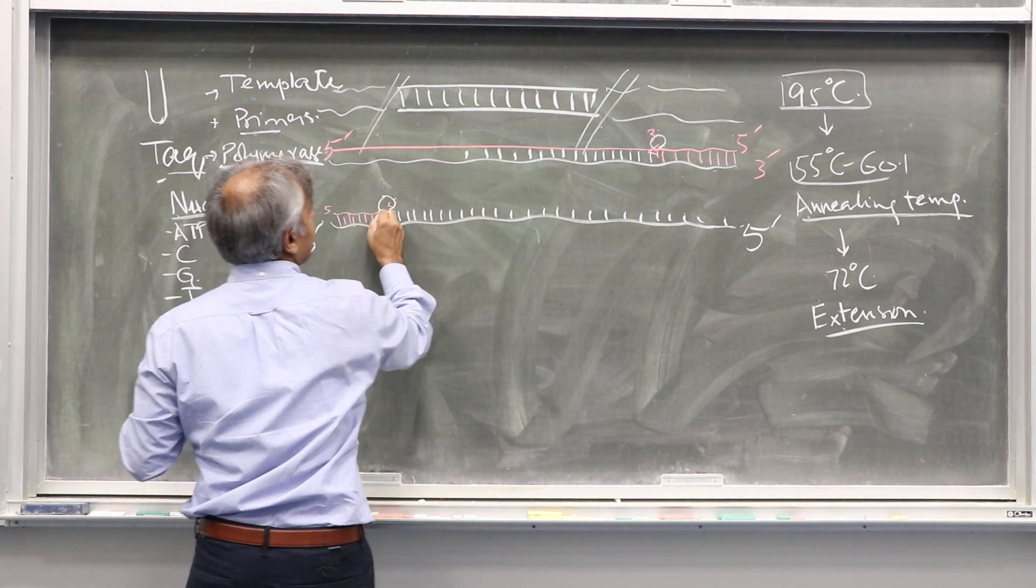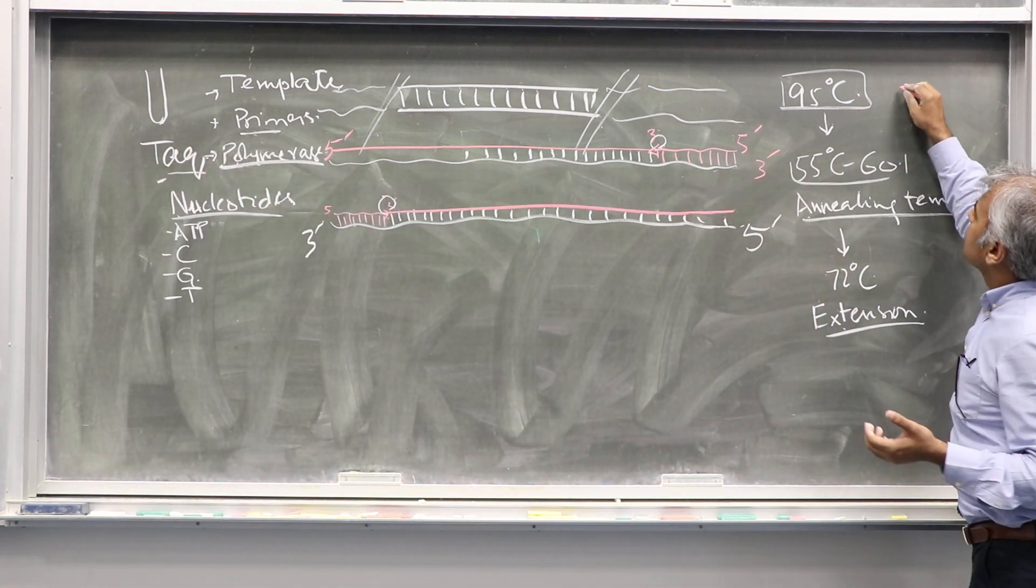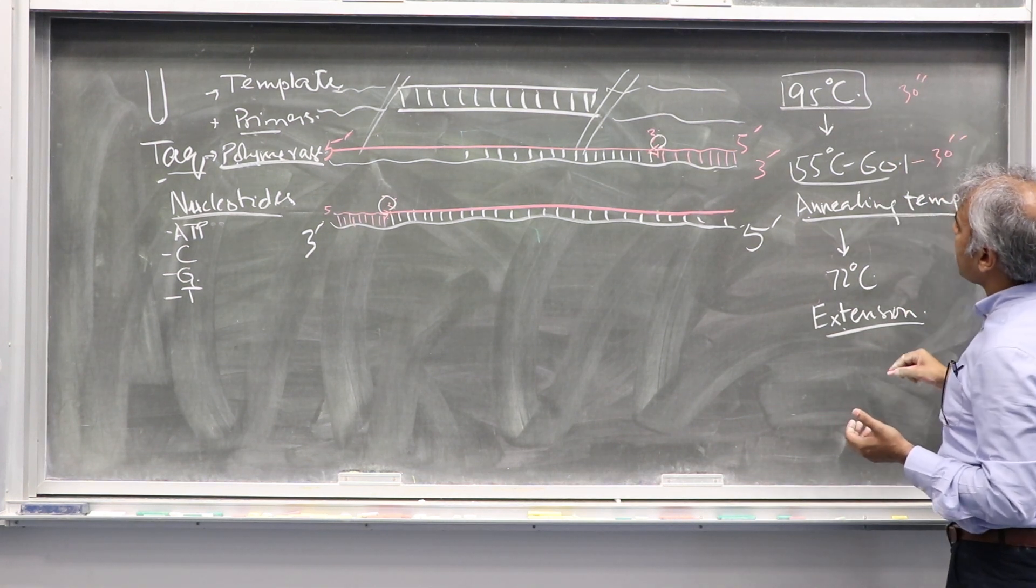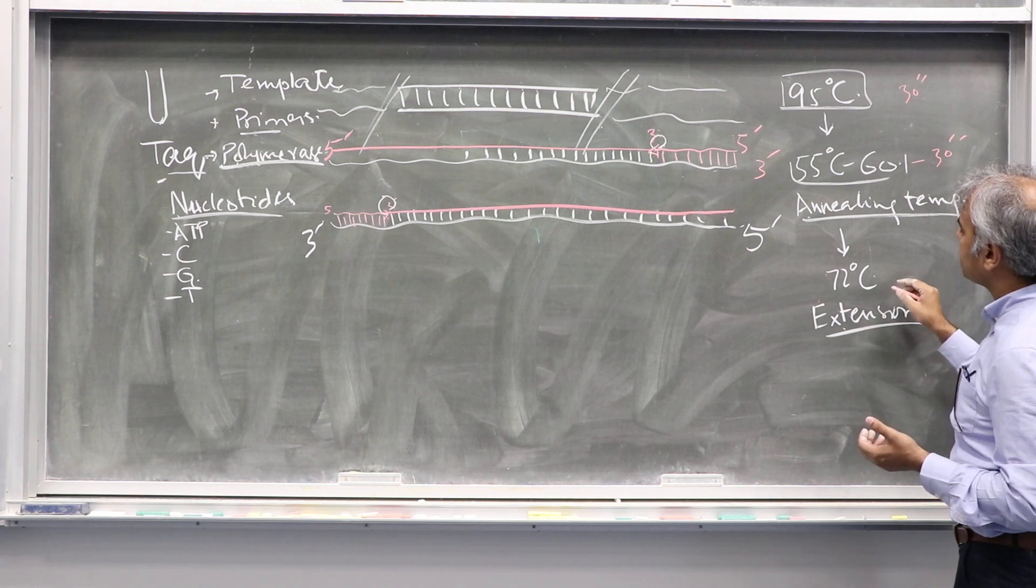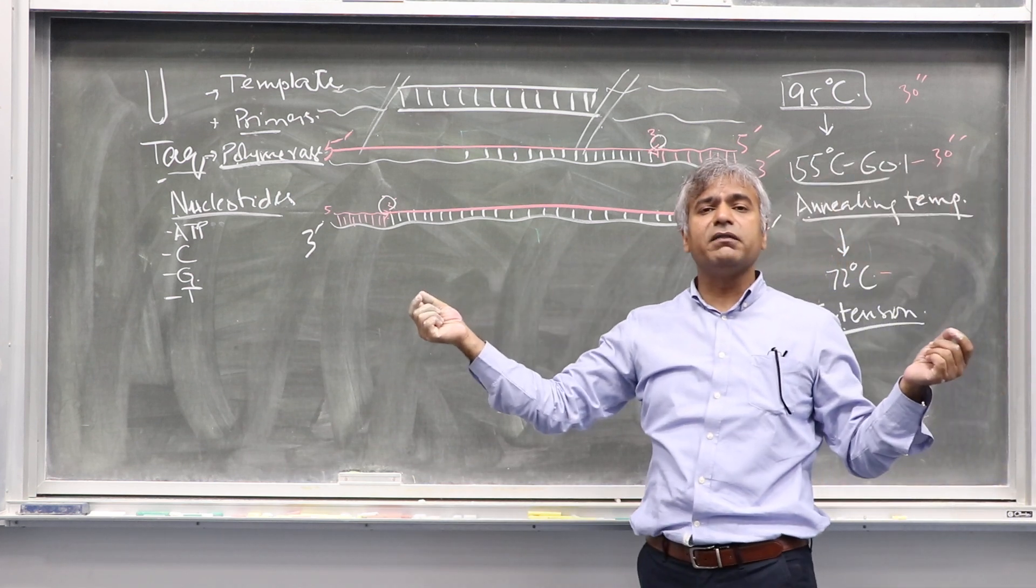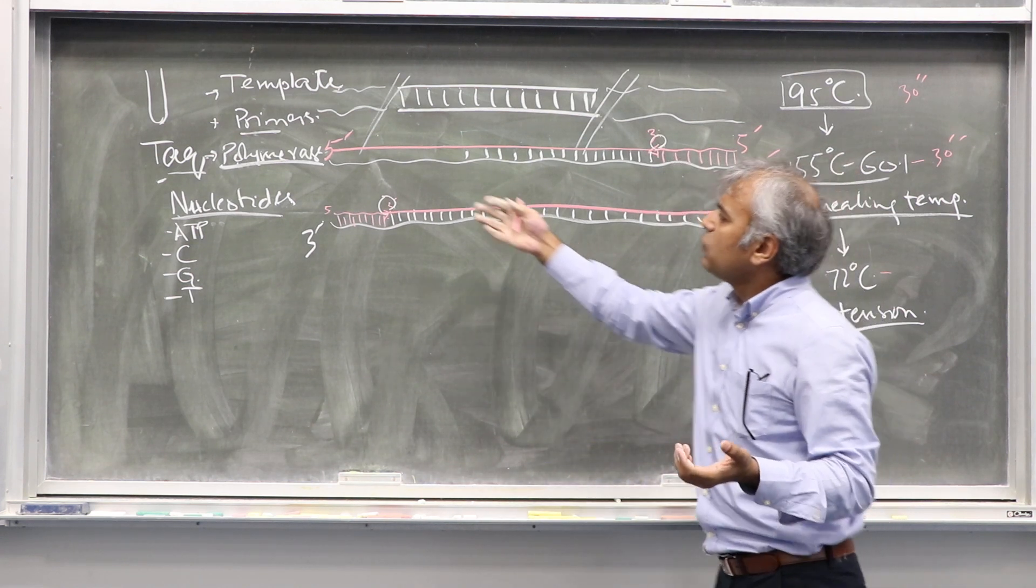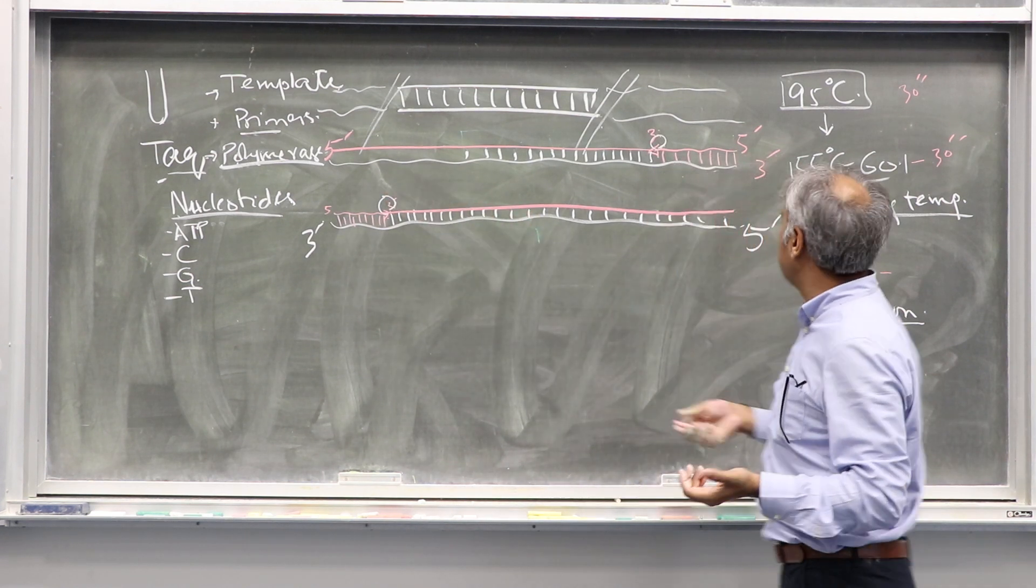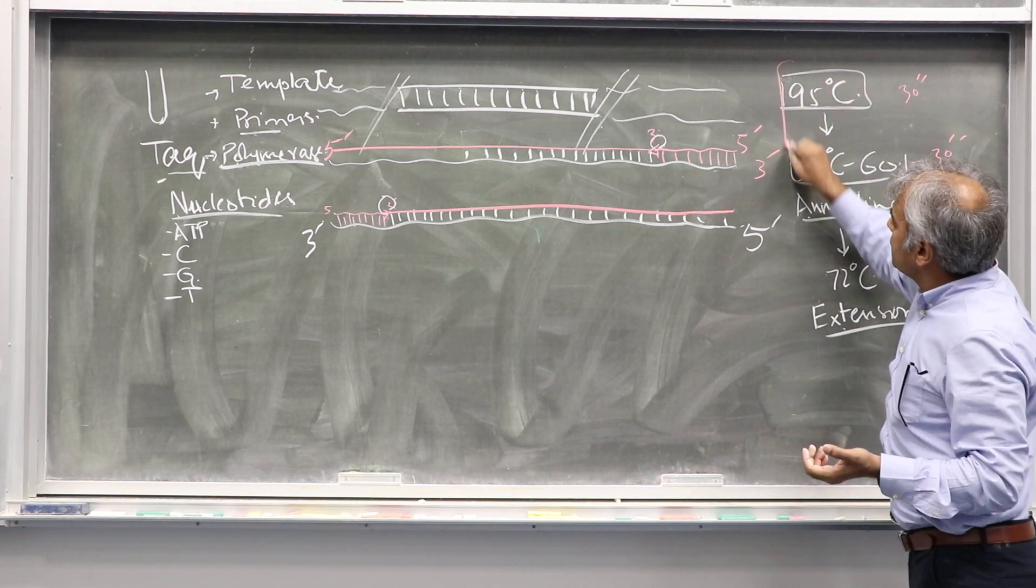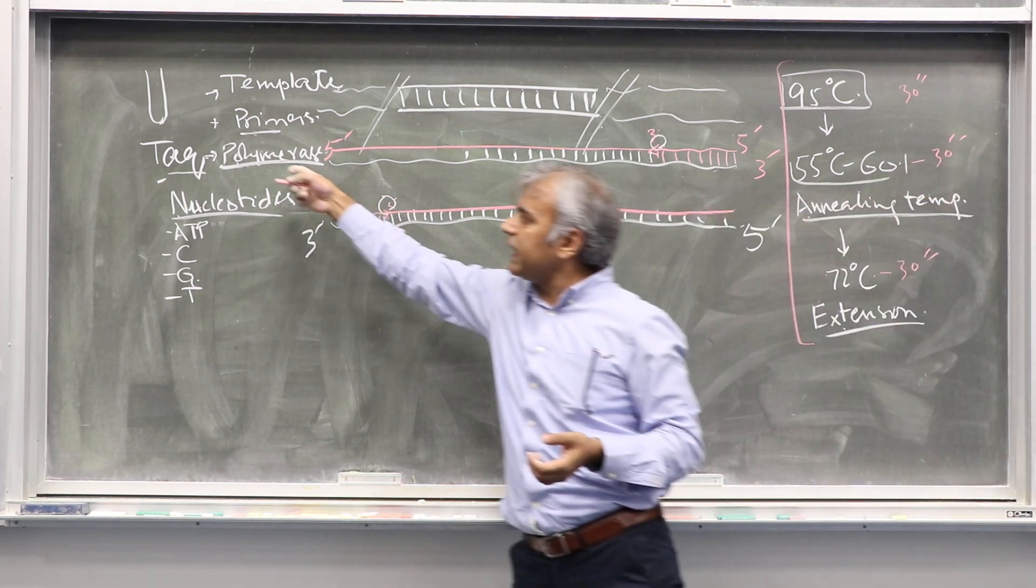We give 30 seconds at 95, 30 seconds at 55 to 60 degrees Celsius. Then the extension time is proportional to the length of the DNA to be amplified. Rule of thumb is one minute for 1 kb. Let's say we have 500 base pairs to be amplified, so we'll give 30 seconds. This is one PCR cycle.